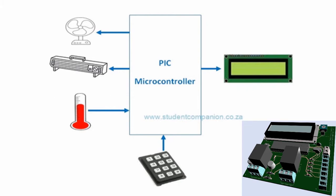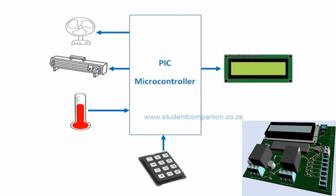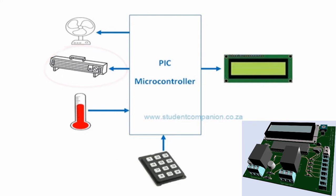The desired temperature setting is entered using a keypad. The temperature of the area is measured using an analog sensor. The microcontroller reads the temperature and compares it with the desired value entered using the keypad. If the desired value is higher than the measured temperature, then the heater is switched on to warm the area. If the measured value is higher than the desired value, then the fan is switched on to cool off the area.